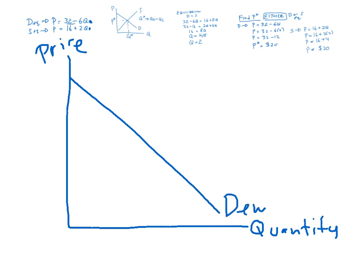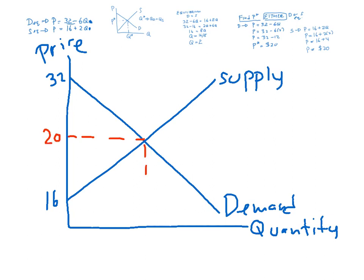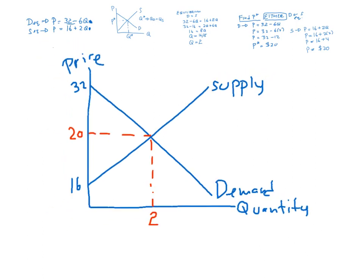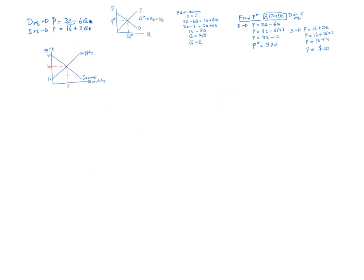Demand. And you should put 32 over here. And for the supply curve. You should put 16 over there. And then you just draw your equilibrium. $20. 2 units. You've drawn your... You've graphically drawn the mathematical explanation. And you have solved the equation. Thank you.